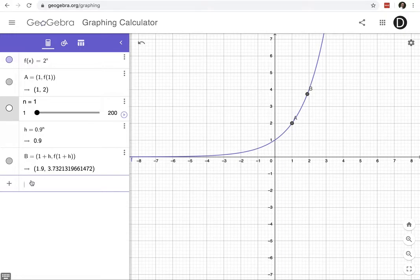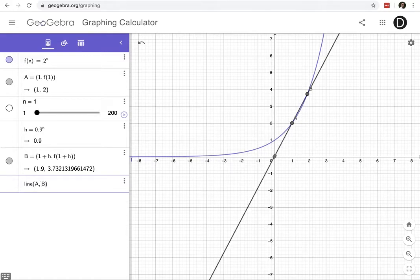Just to illustrate that line, let me create the secant line. It goes from point A to point B.